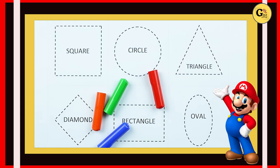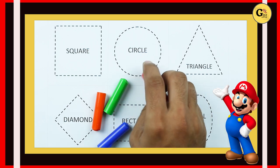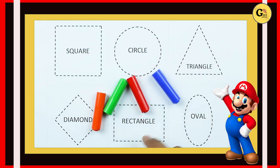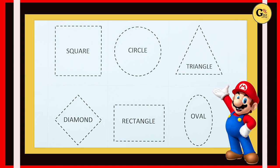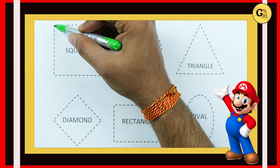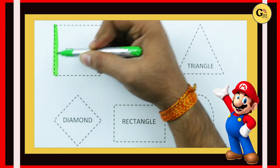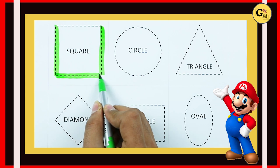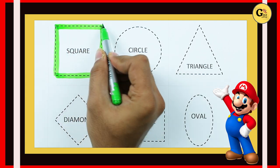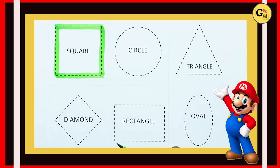Hello friends, today we learn shapes: square, circle, triangle, diamond, rectangle, oval, with colors red, blue, orange, and green. Let's start! It's a square — one line, two lines, three lines, four lines: two sleeping lines, two standing lines.